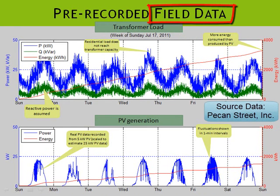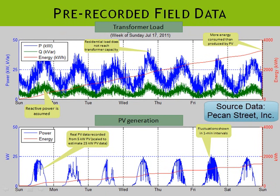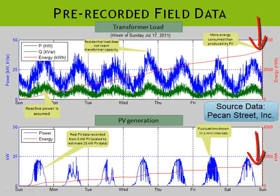Let's look at what we mean by pre-recorded field data. The following data corresponds to a week in July of 2011. The top curve set shows the residential power and energy for eight homes over one week. The blue curve shows the real power consumption, the green curve shows the reactive power consumption, and the red curve plotted against the right-side axis shows the total energy consumed by the eight homes in the course of the week. The bottom chart shows the power and energy generated by the 25 kW PV over the course of the same week. Comparing the red curves on the top and bottom, it is noticed that the eight homes consumed more energy than what the PV produced.